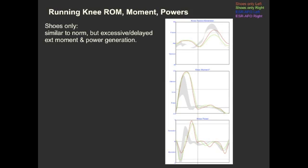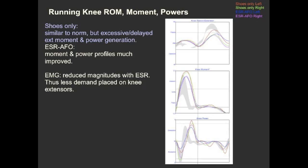If I show you the shoes-only condition, you can see that the knee profiles were similar to normal, but with exaggerated and delayed extensor moment in the second half of stance. Similarly with the power plots, you'll see that exaggerated and delayed power generation occurring in the second half of stance in the shoes-only condition. Contrast that to running with the ESR AFOs, and you'll see improved knee profiles. The knee moment magnitudes are now within normal and occurring closer to when they should for a normal running pattern.